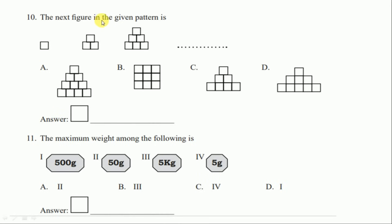Question number ten: the next figure in the given pattern. The pattern shows one square, then two squares, then three squares. Option B has only three squares as a base and option has four — these won't work. In the second row, zero then one then two squares, so next should be three. Option A has three squares in the second row, so the correct answer is option A.